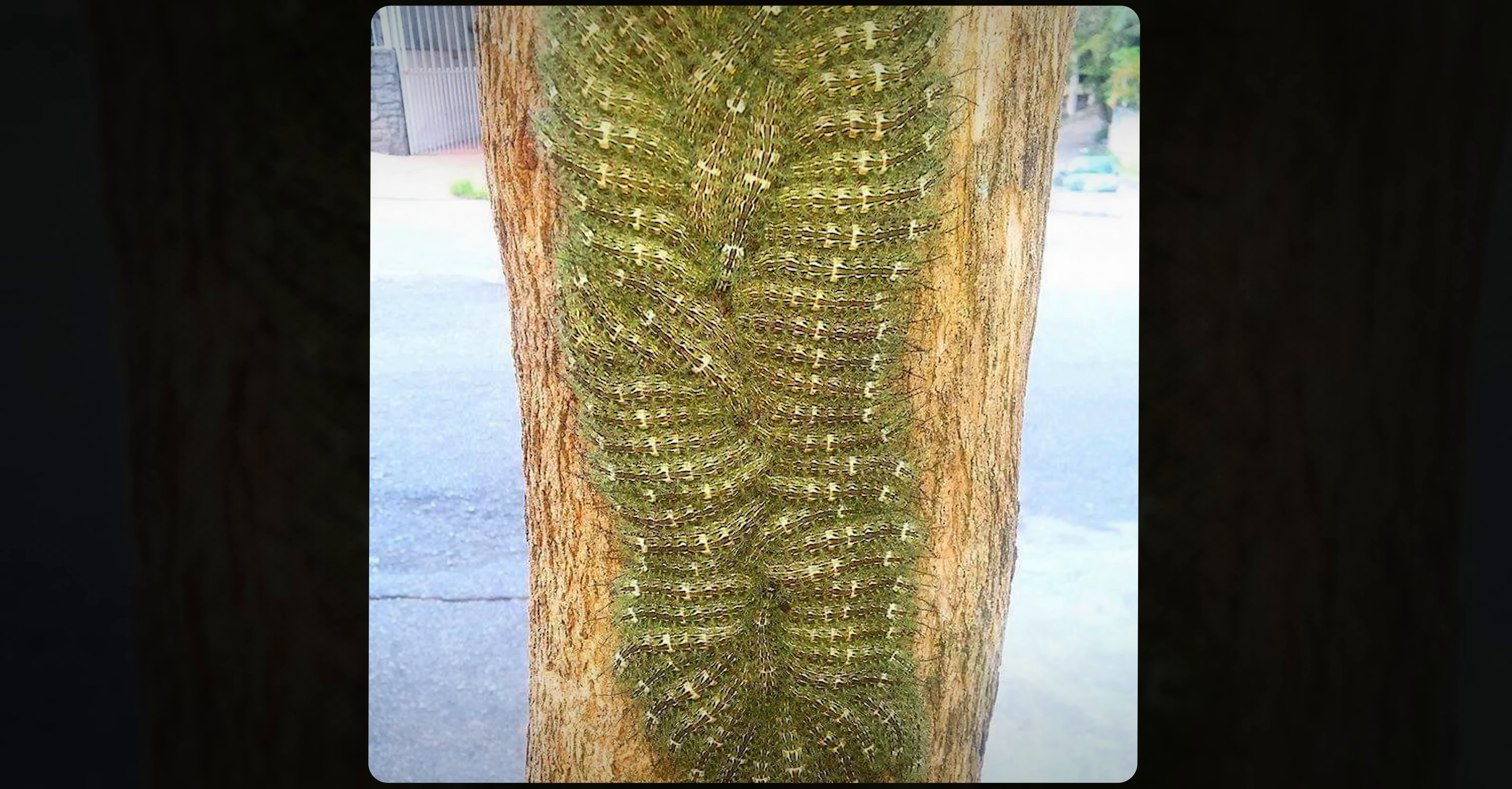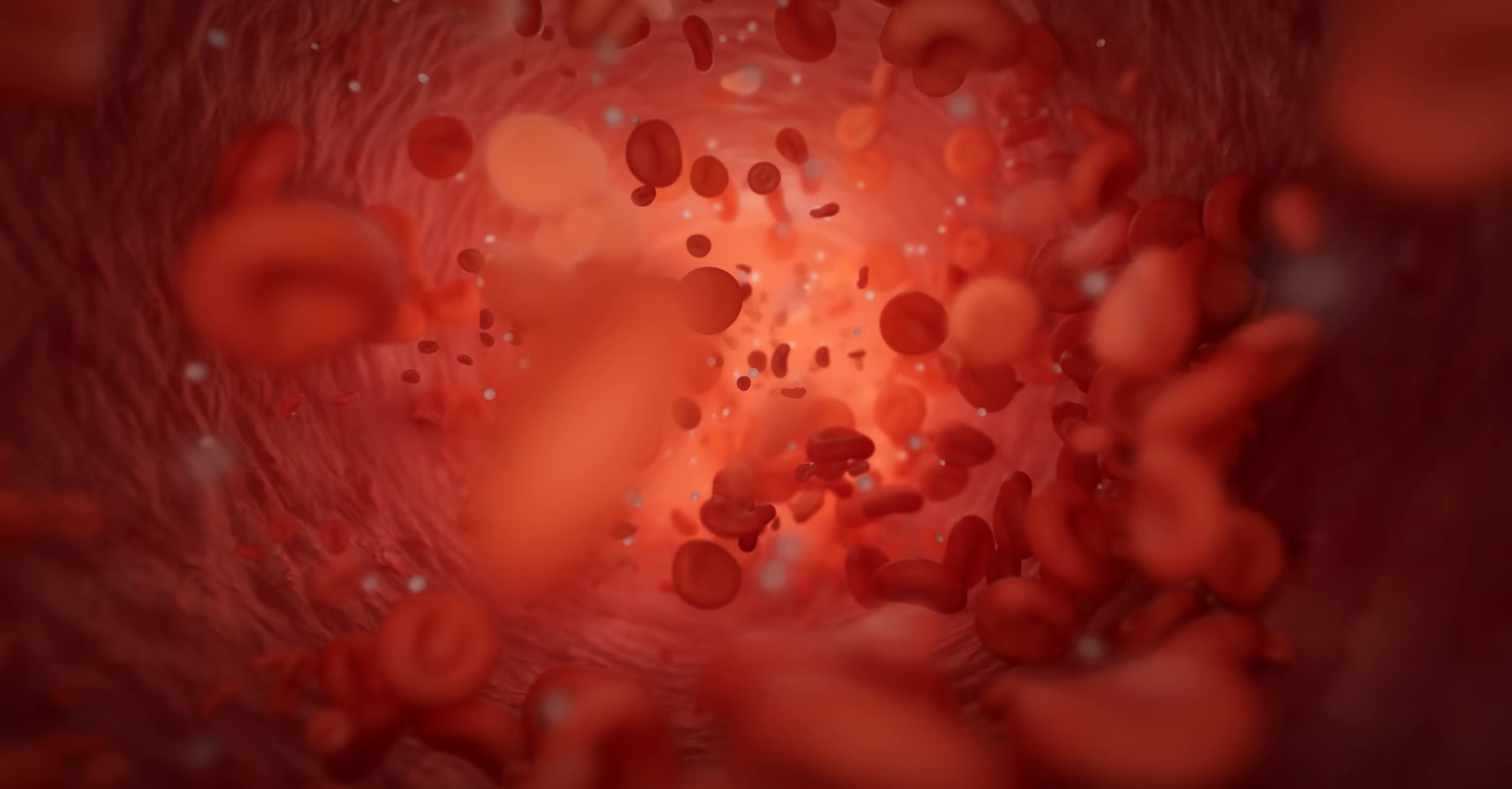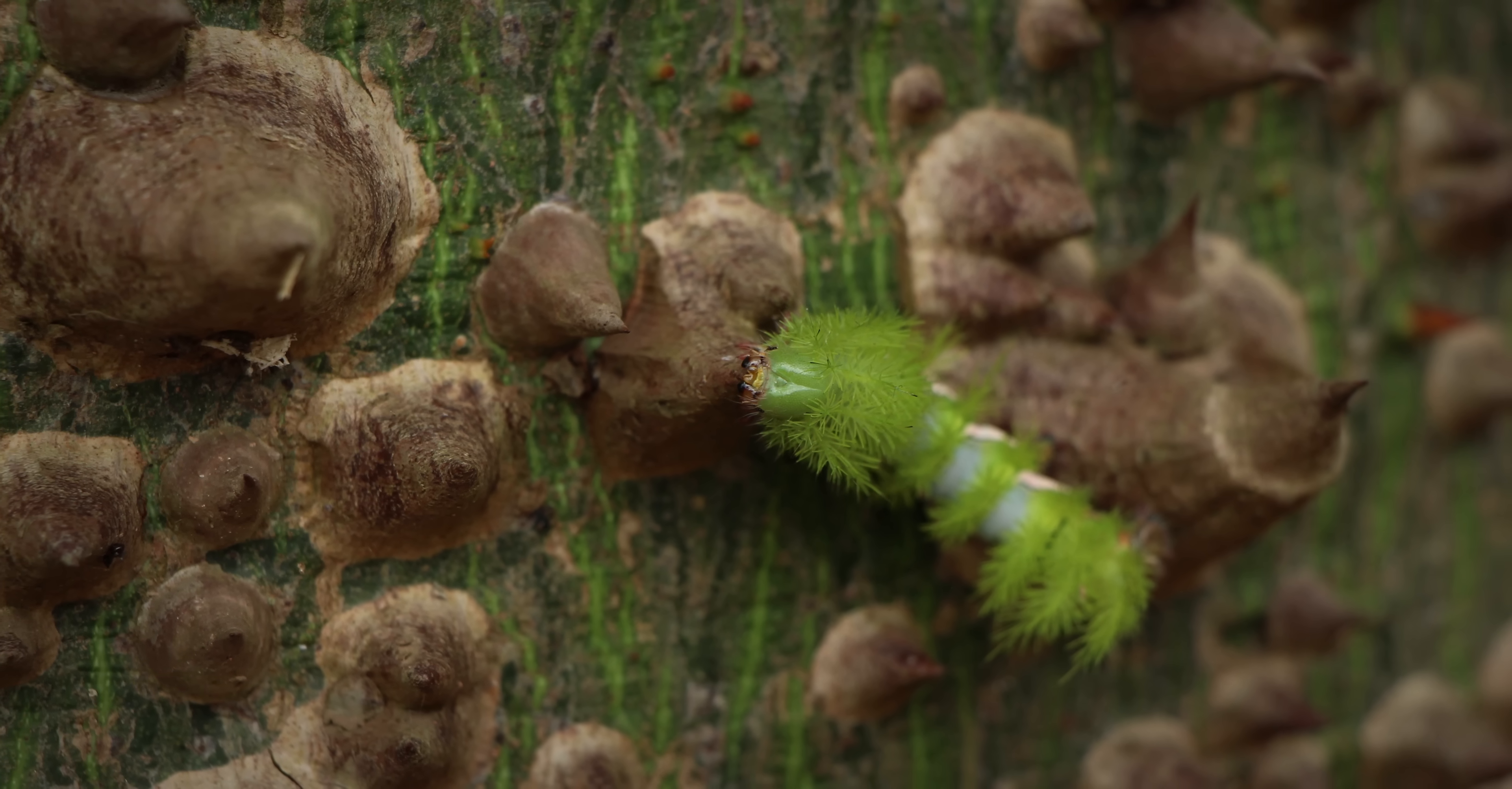Lonomia obliqua's venom is stored in tiny sacs at the base of its spines. When these spines puncture human skin, the venom travels through hollow bristles and straight into the bloodstream. Packed with powerful blood thinners, it throws the body's clotting system into chaos and sometimes causes deadly internal bleeding. Without intervention, what seemed like a harmless brush with a caterpillar can turn into a full-blown medical emergency.